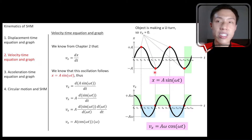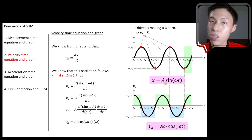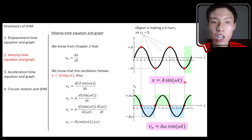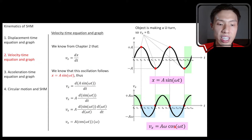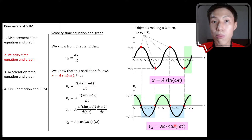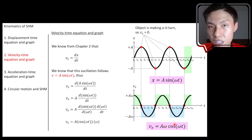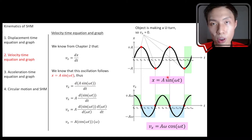As mentioned before, the equation for x can be cosine, or it can even have a plus or minus phase shift. So this is not a fixed equation — you have to derive it every time using differentiation. You cannot simply say v is always Aω cos(ωt). It can be sine sometimes, or negative sine, or negative cosine — it depends on what your equation for x is.